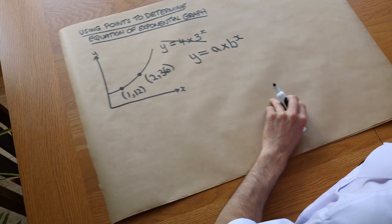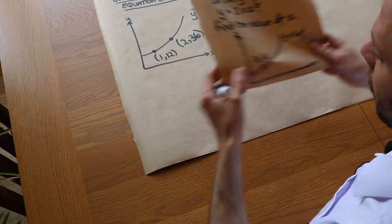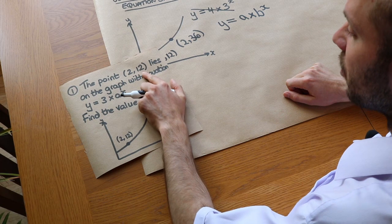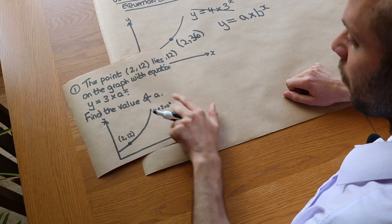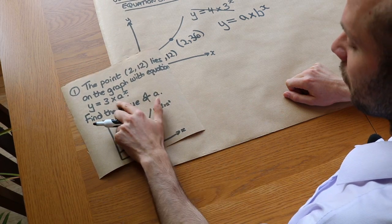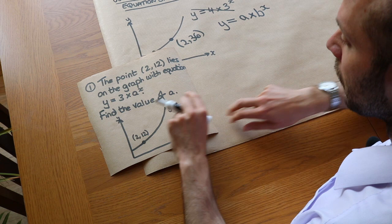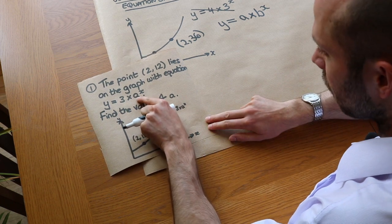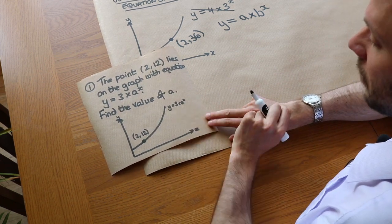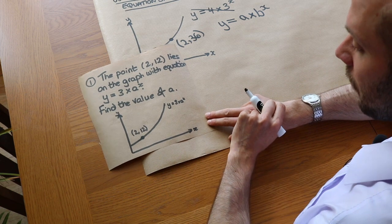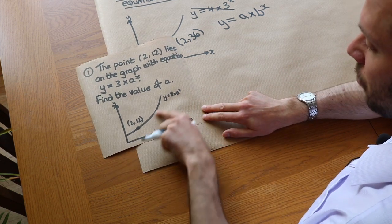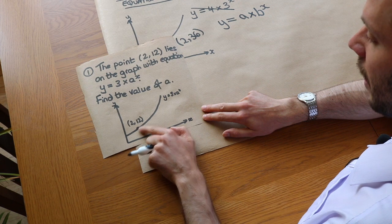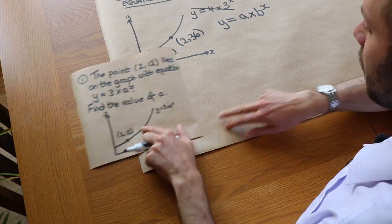Let's start with an easier one first. The point (2, 12) lies on the graph with equation y equals 3 times a to the x. This time we have just one unknown value, a, and we have to find it. I've drawn the graph here with the point (2, 12) on it.